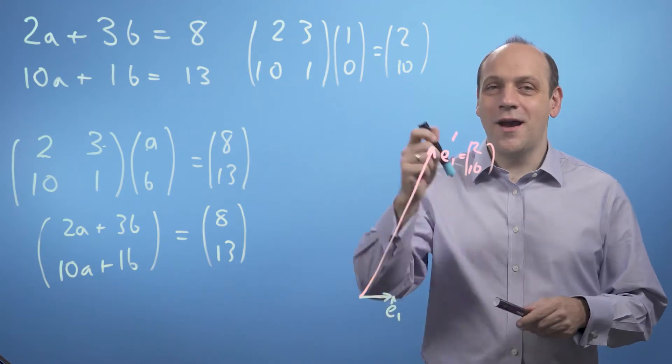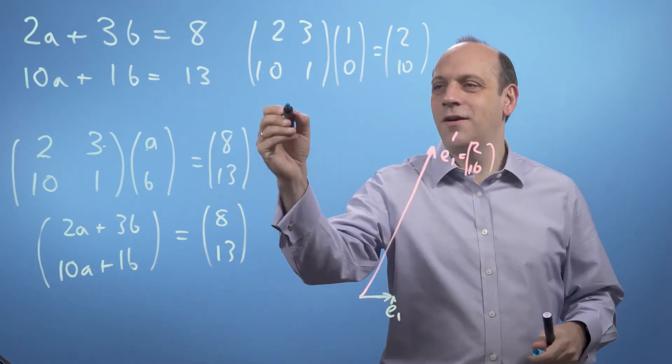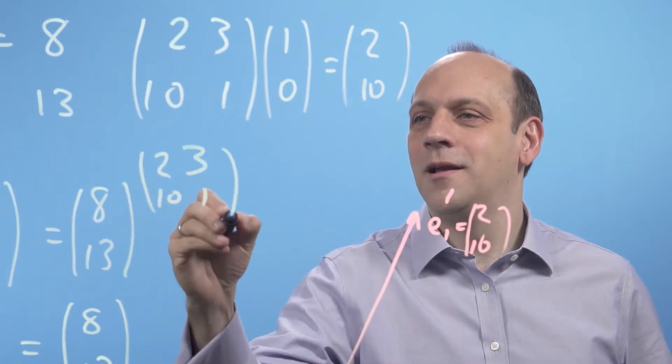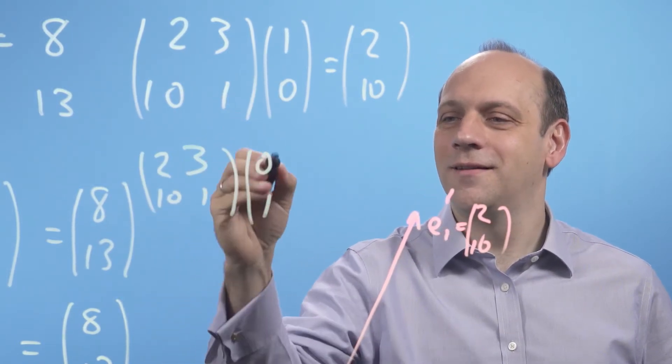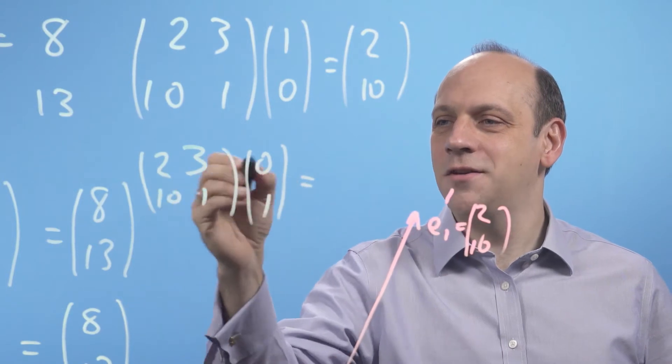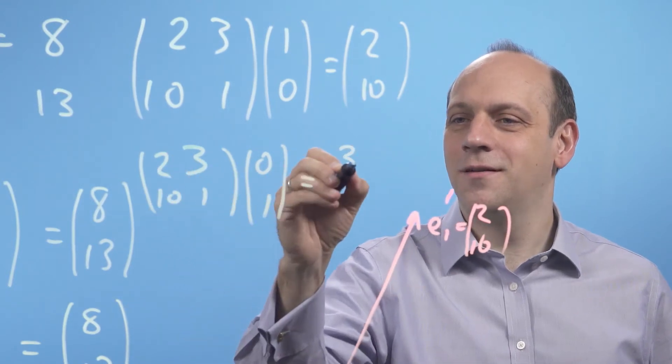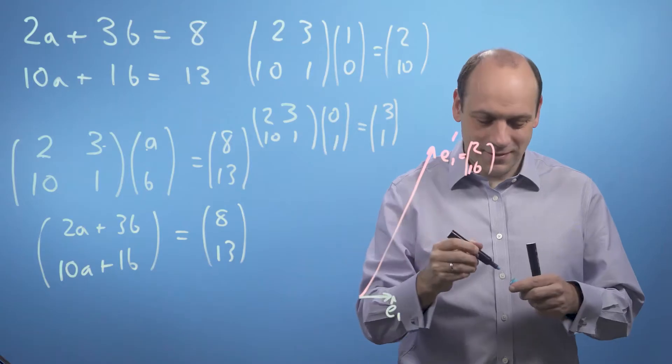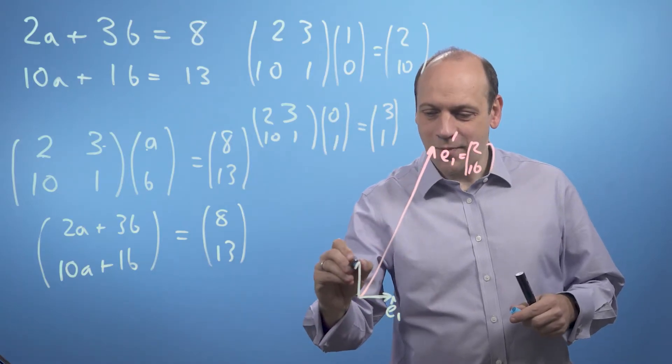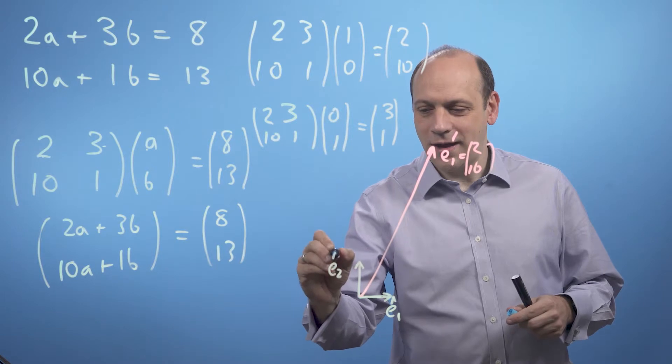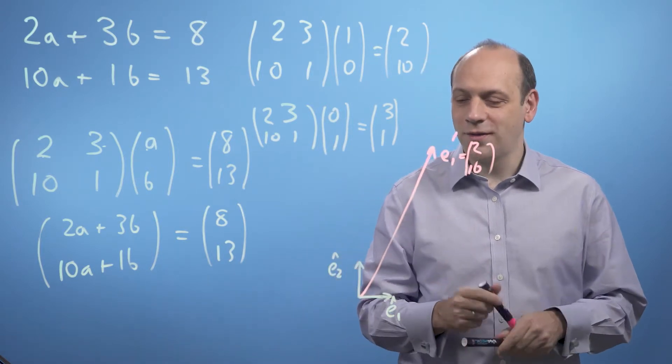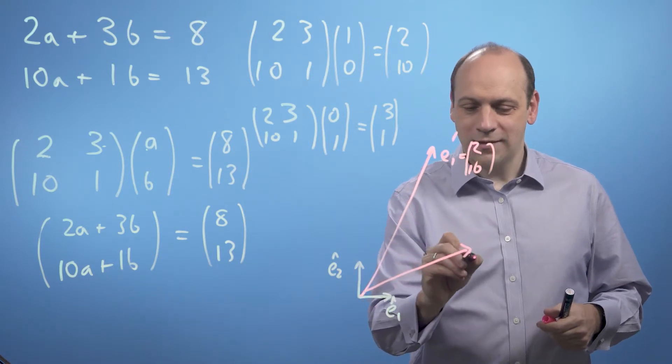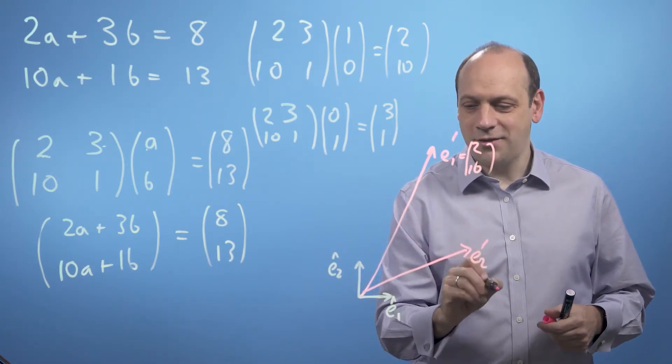Now, if I do that with the other basis vector, if I do 2, 3, 10, 1 multiplied by 0, 1, then I'm going to get 2 times 0 plus 3 times 1, 10 times 0 plus 1 times 1, I'm going to get 3, 1. So the other basis vector, e2 hat, gets transformed over to 3, 1, which is going to be over here somewhere. So that's e2 changed. I'm using the prime here to indicate changed, 3, 1.